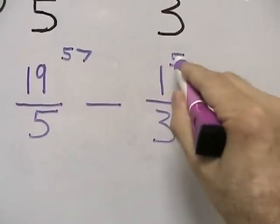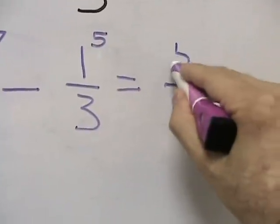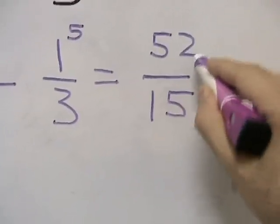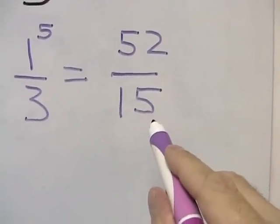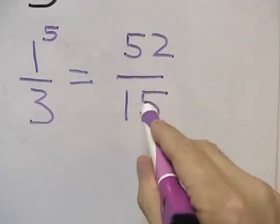We take 57, subtract 5, and we have 52 for an answer of 52 fifteenths. Once again, this is an improper fraction because the numerator is greater than the denominator.